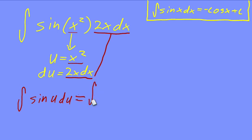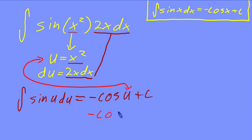The integral of sine of u du equals negative cosine of u plus c. Our u, we have there. We just substitute back in. Negative cosine of x squared plus c is our answer.